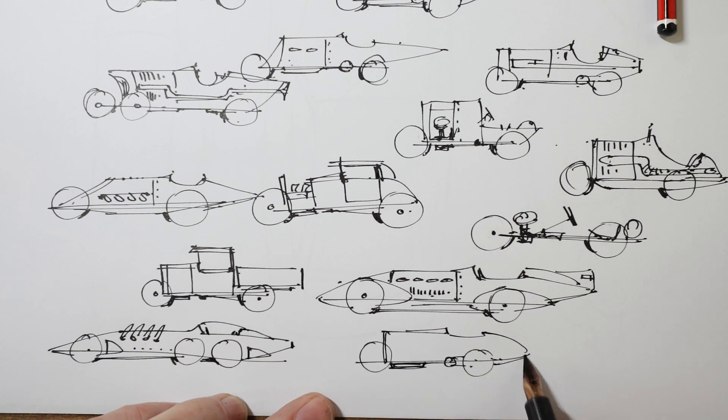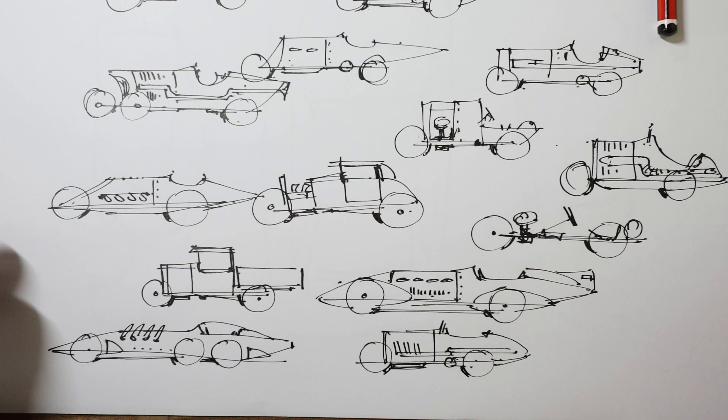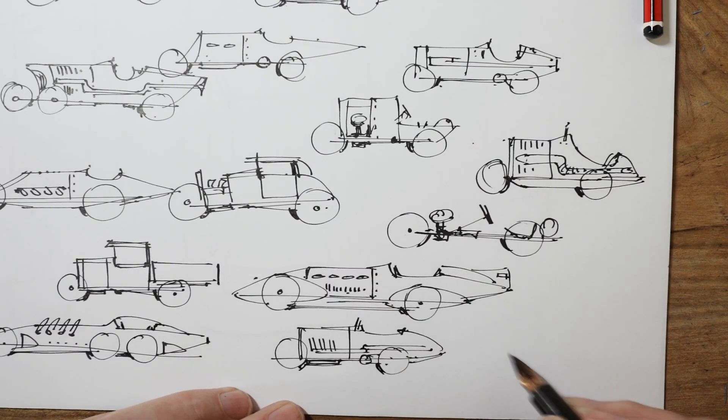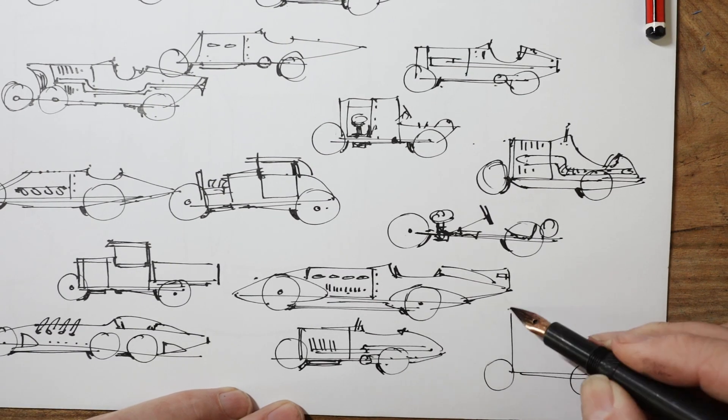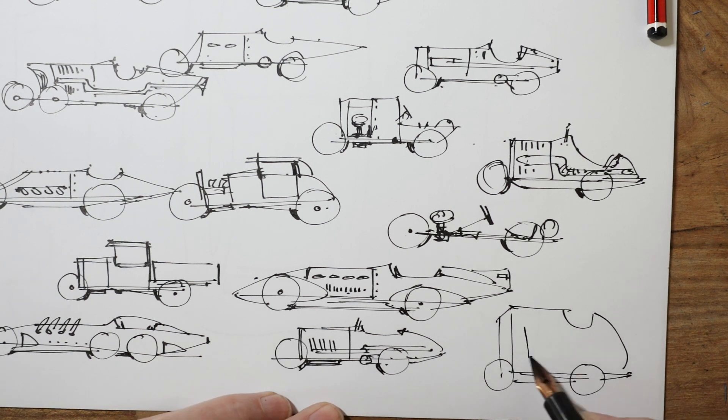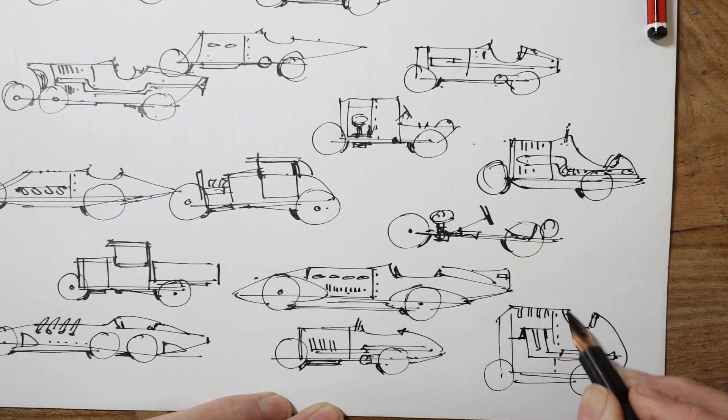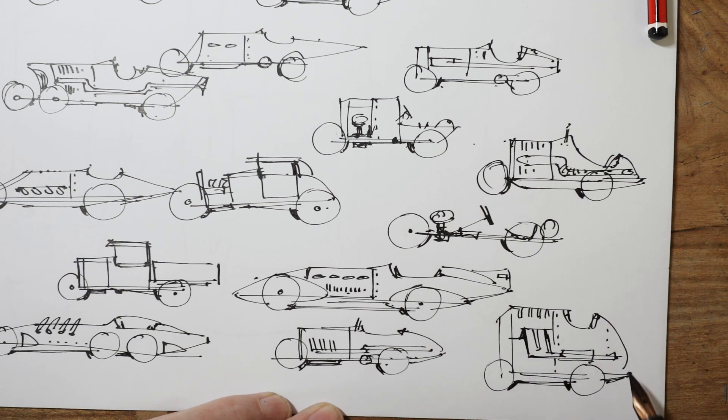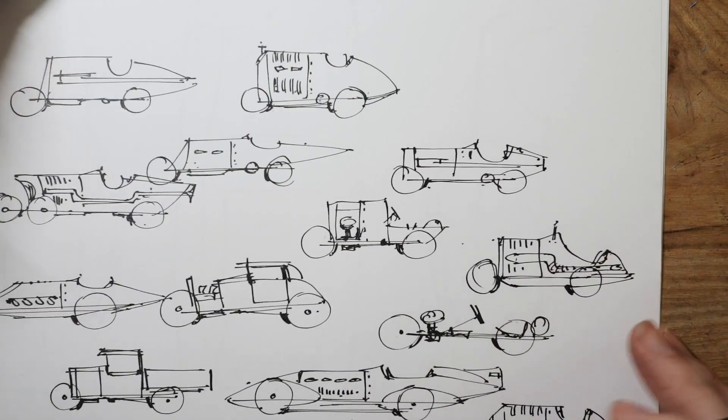Or which combinations of these—maybe I like the front part of this but the tail of this one or the proportions of this. So you can just pick and choose and you've got all of these ideas in front of you rather than just trying to pluck them out of your head. It's definitely a really useful thing to do, so have a go at it the next time you're asked to design something.